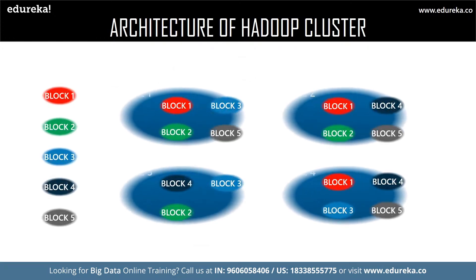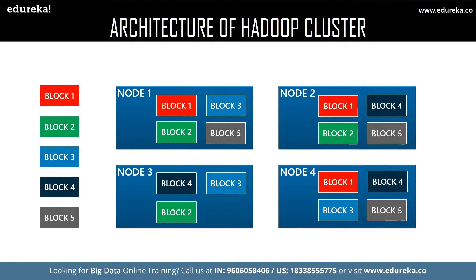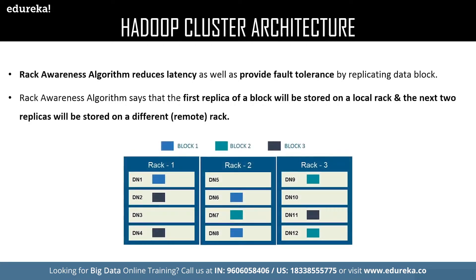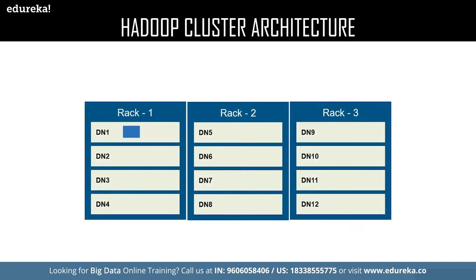The rack awareness algorithm is all about data storage. It states that the first replica of the actual data must be located in the local rack, and the rest of the replicas can be stored on a different remote rack. For example, a data block on Data Node 1 is available on Rack 1, the local rack. According to the rack awareness algorithm, the replica of this data block can be stored in a remote rack — Rack 2 or Rack 3. As you can see, the replicas have been stored in the remote Rack 2.